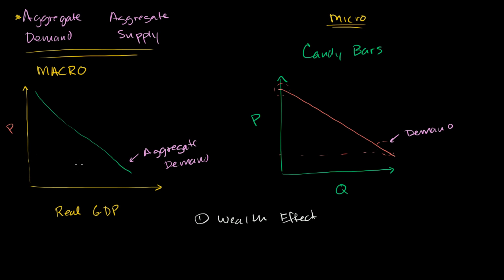But that's not what we're saying here. Remember, ceteris paribus — all other things equal. We're assuming only prices have gone down. Employment has not changed, profits have not changed, people's optimism has not changed. The only thing that changes is people wake up one day and everything in the economy is half the price it was before. People have the same savings and the same amount of money in their wallet. If that happens, with the same amount of money in their pocket, they can now buy more. They feel wealthier.